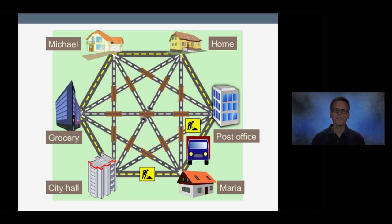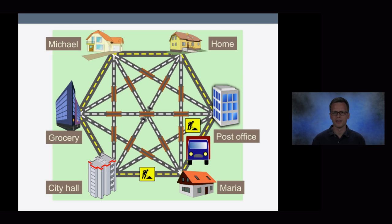So let's say you have a very busy day ahead of you, where you want to visit your two friends Michael and Maria, go to the post office, pick up a new parking permit at the city hall, and do groceries. When you're at home, you try to find the best way to do all these things. But you also know there are two construction sites in the city and you're not really sure how much delay they might cause. So based on some assumption, you will find a best guess for the order of your visits.